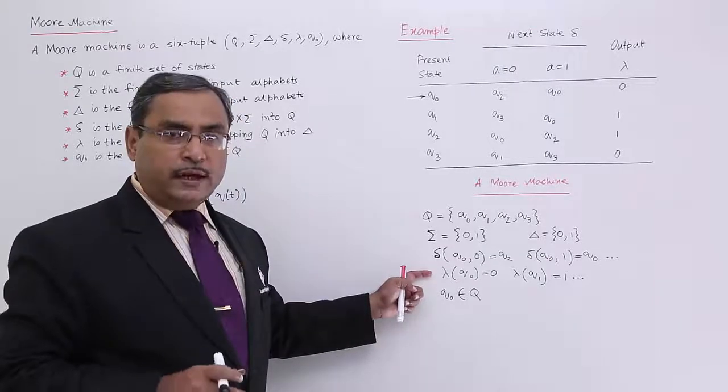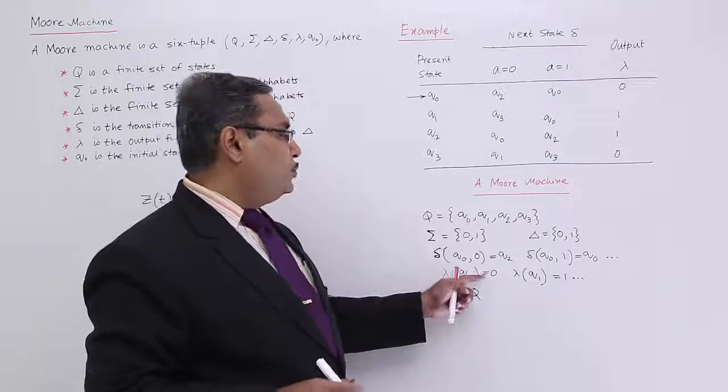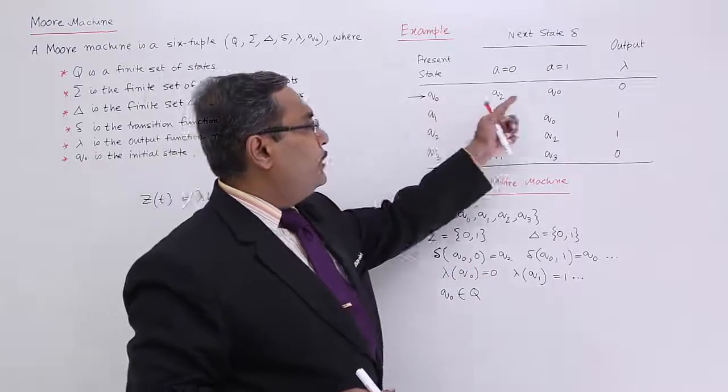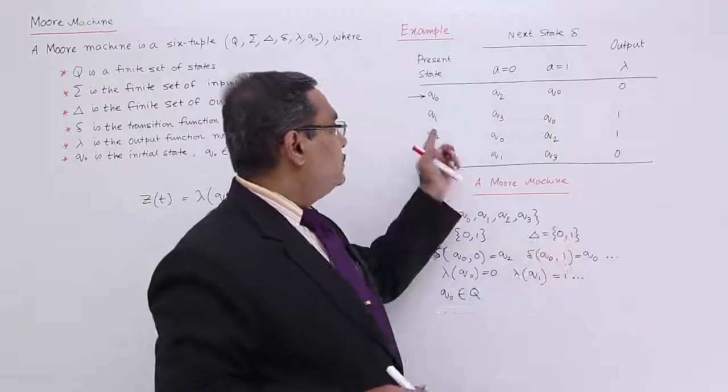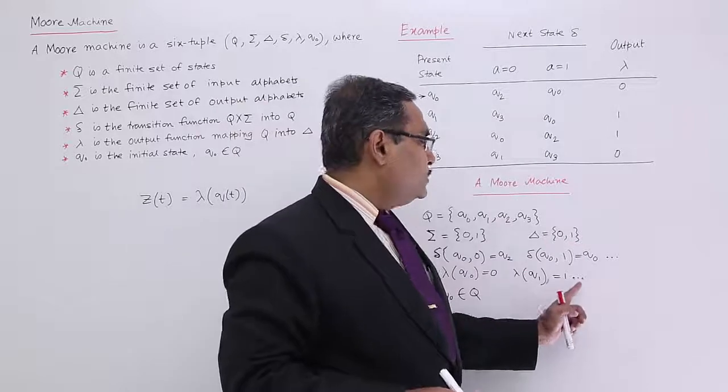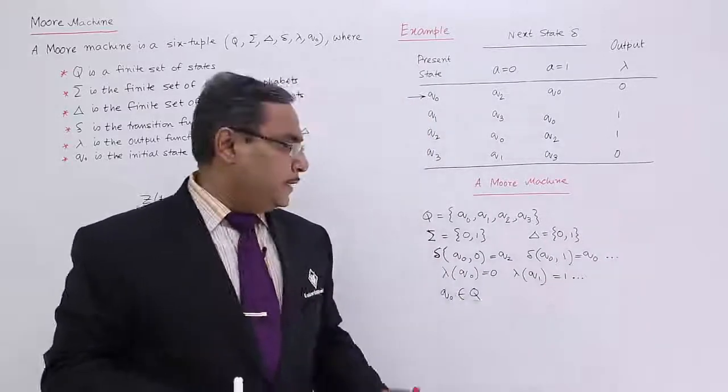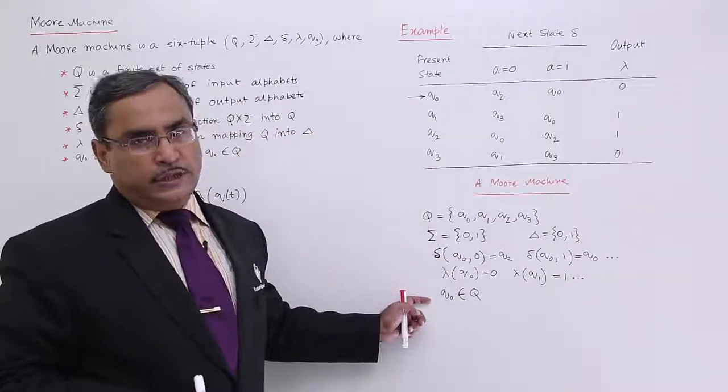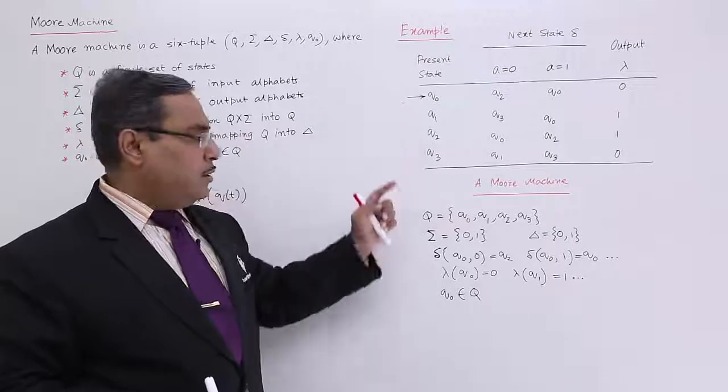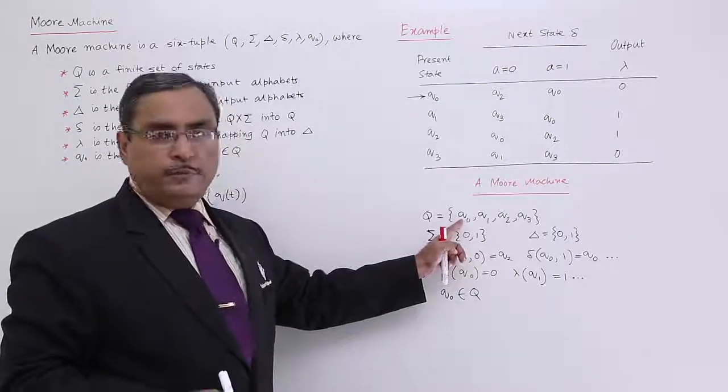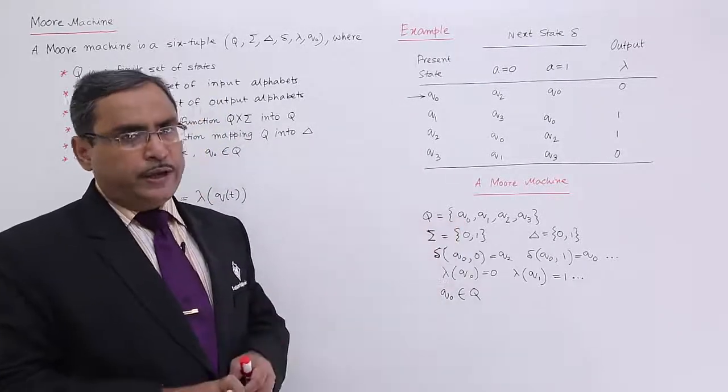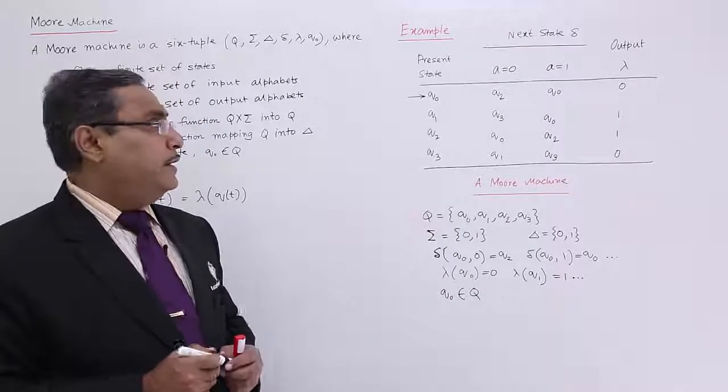Lambda function means it will decide the output. Lambda of q0 will have 0, and lambda of q1 will have 1. In this way I could have declared the other two, and q0 is the initial state. It has been marked as initial state which belongs to capital Q. Yes, it belongs to capital Q. In this way a Moore machine we have defined here.